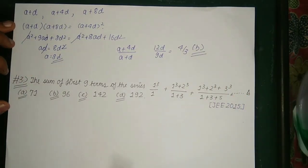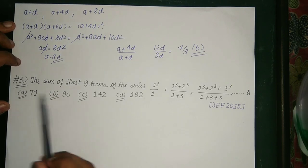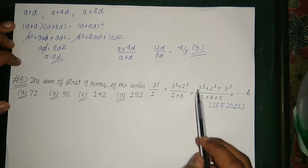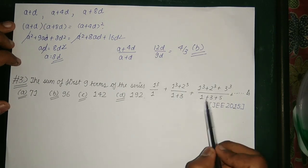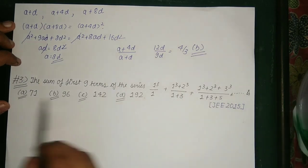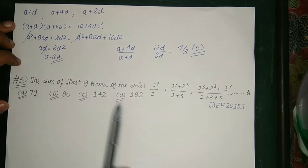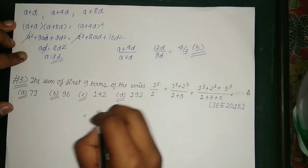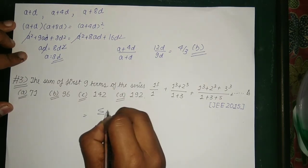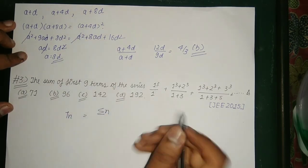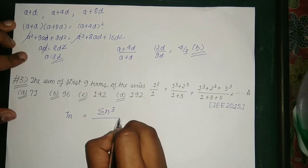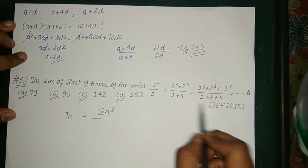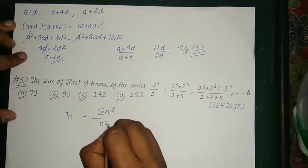Now let's look at the last question of the video. The sum of the first 9 terms of the series 1³/(1) + (1³+2³)/(1+3) + (1³+2³+3³)/(1+3+5)... is given as 71, 96, 142, or 192. The denominator can be given by the summation of odd numbers: 1 = 1², 1+3 = 4 = 2², 1+3+5 = 9 = 3², so the denominator is n².